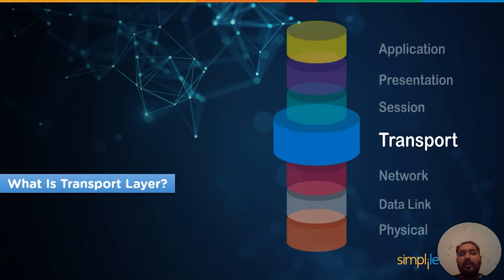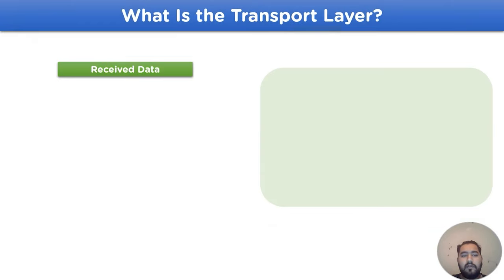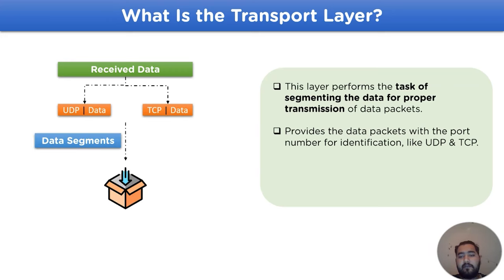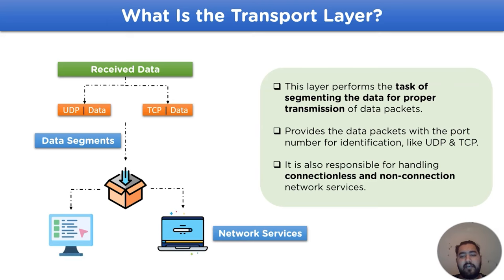The transport layer is responsible for overseeing the data being transmitted and checking there is no error in the data using different network protocols, for example UDP and TCP. These data segments are then shared over connection and non-connection network services. It also identifies suitable communication channels for the data.